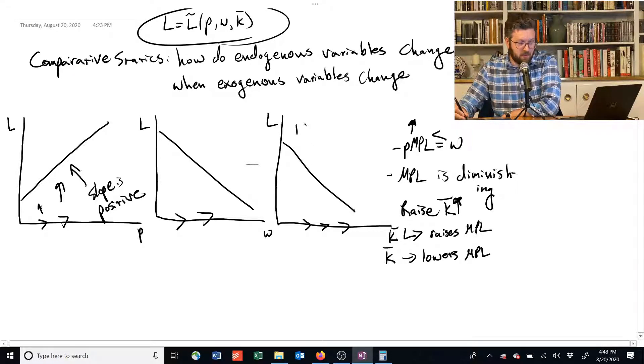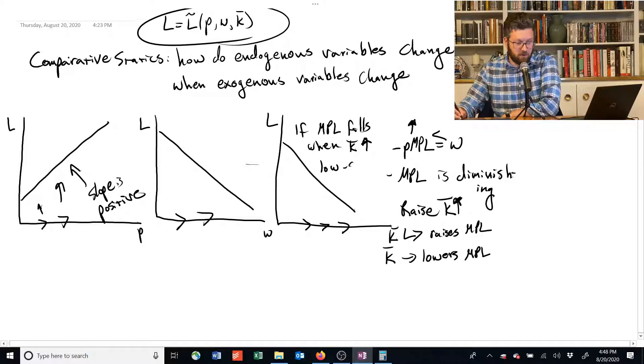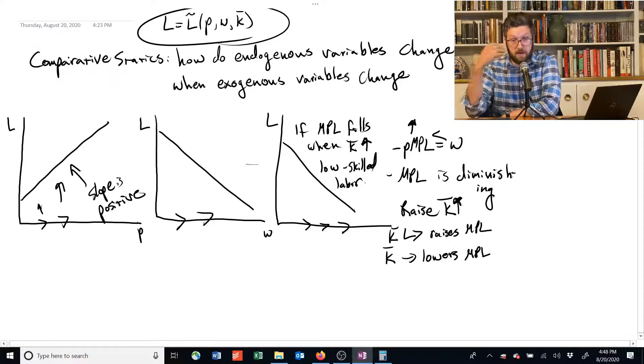So in that case, we're here. If the marginal product of labor falls when K bar goes up. And we typically think that this is for low-skilled labor who can be replaced and can't work effectively with this stuff.